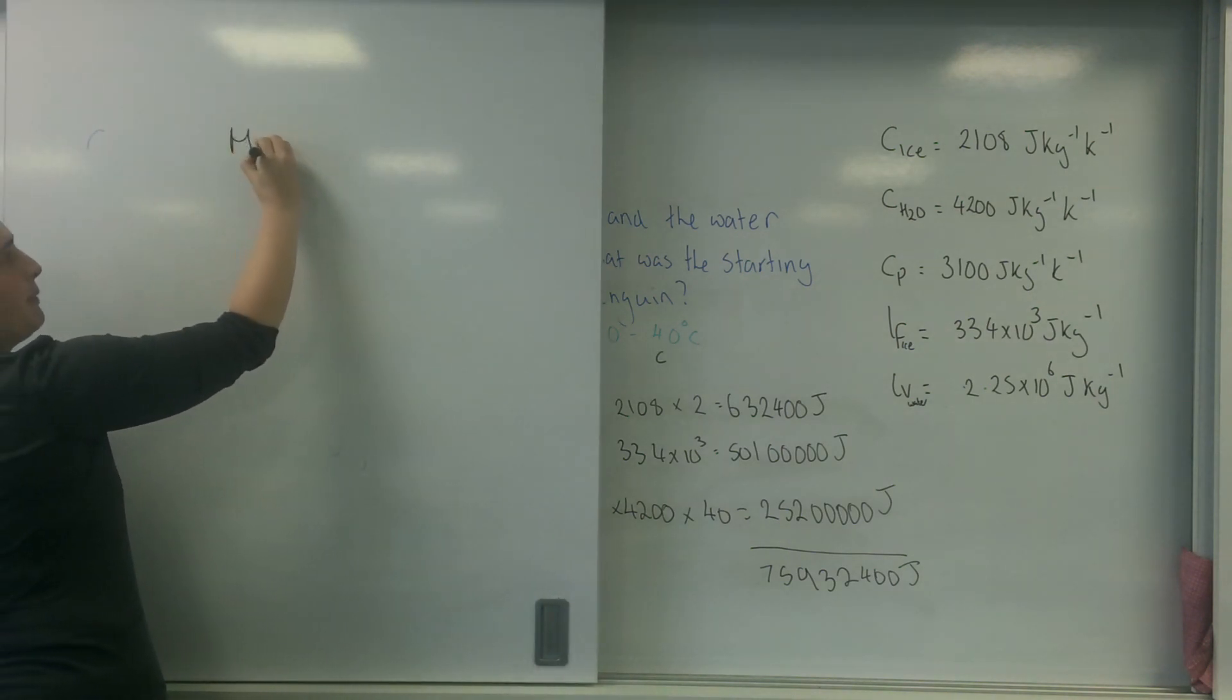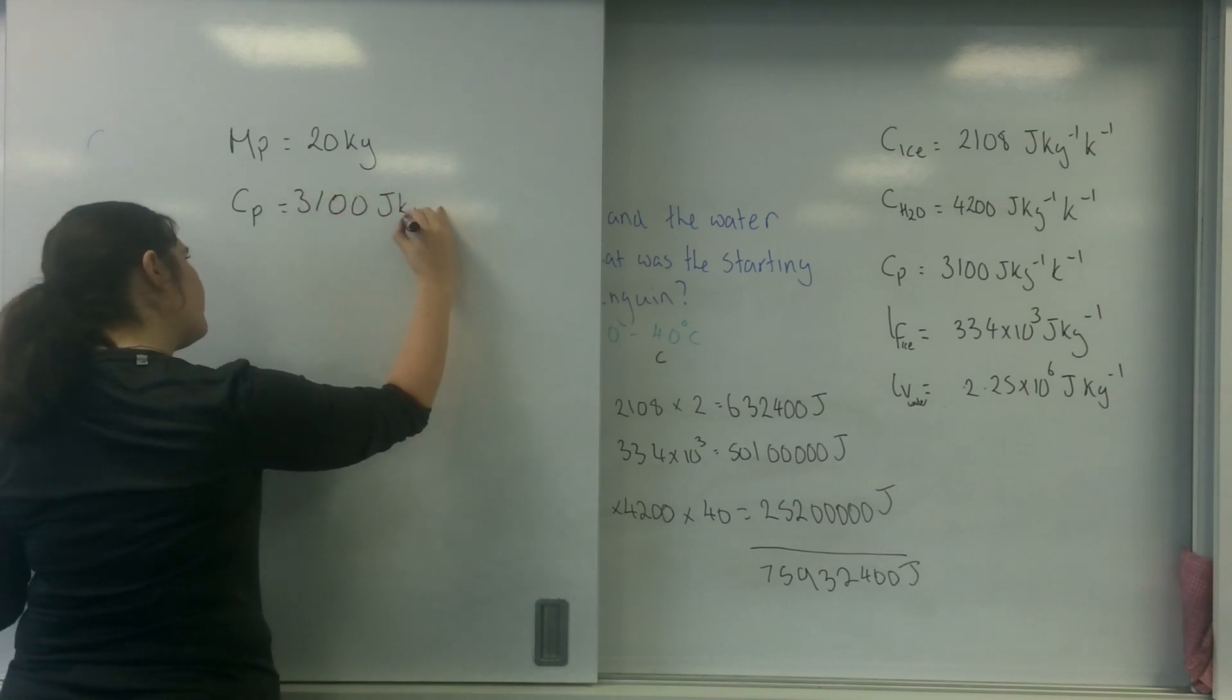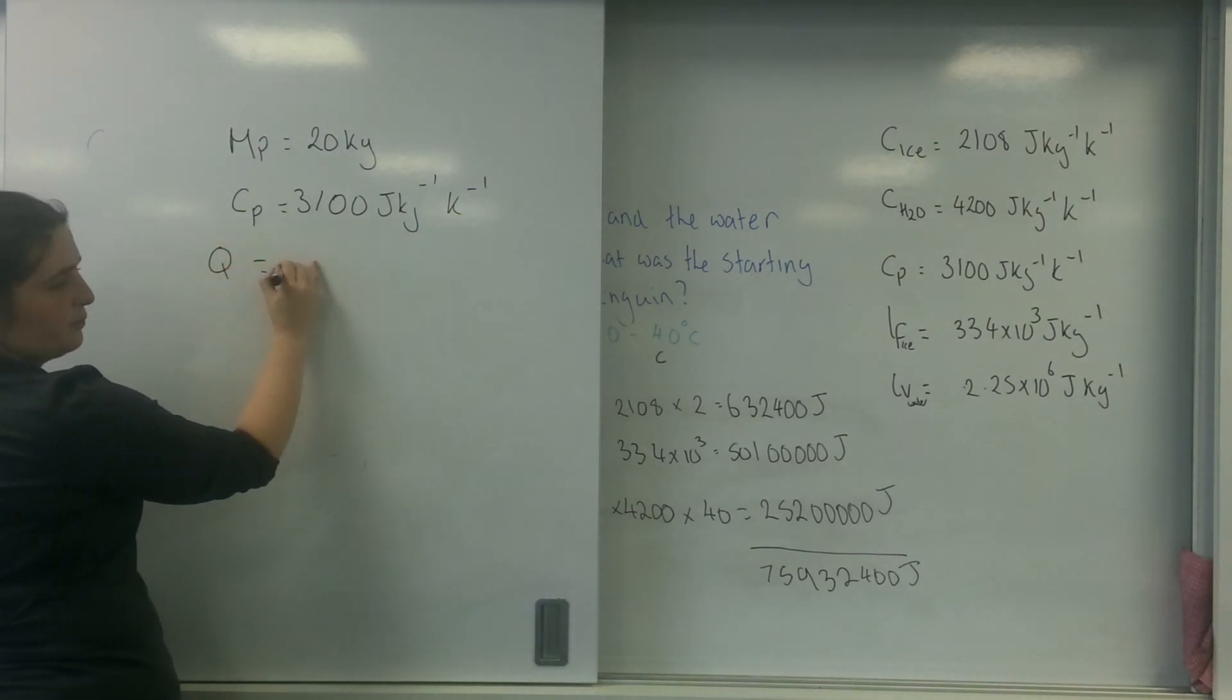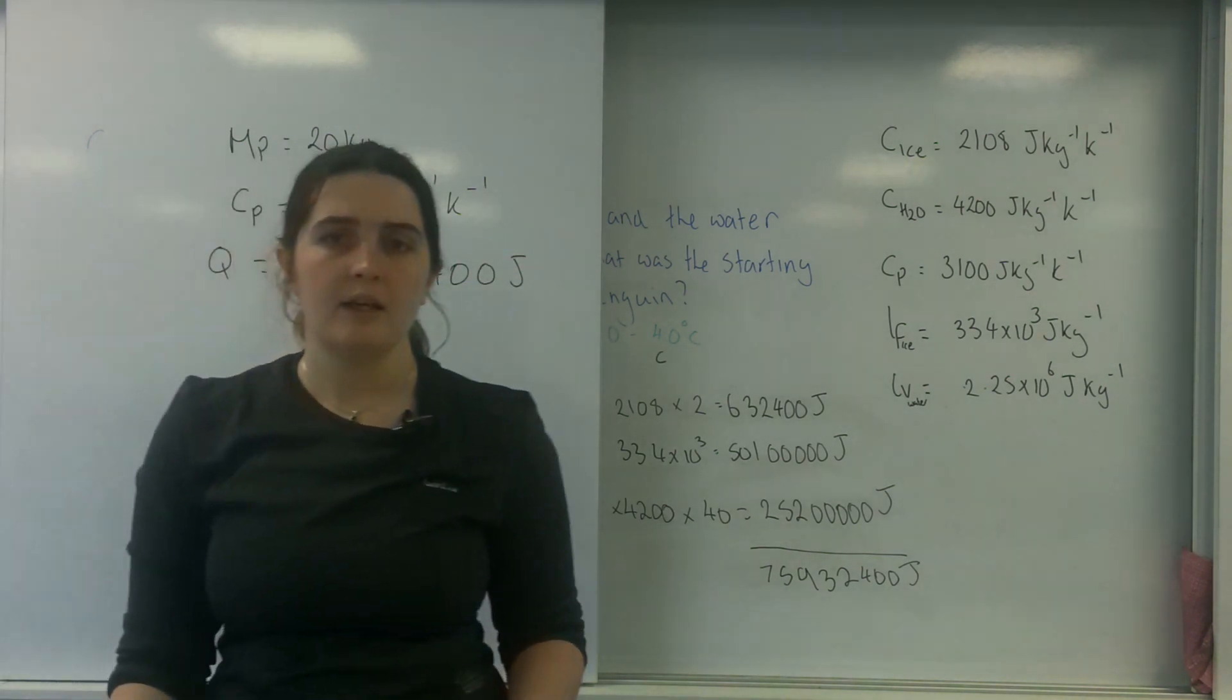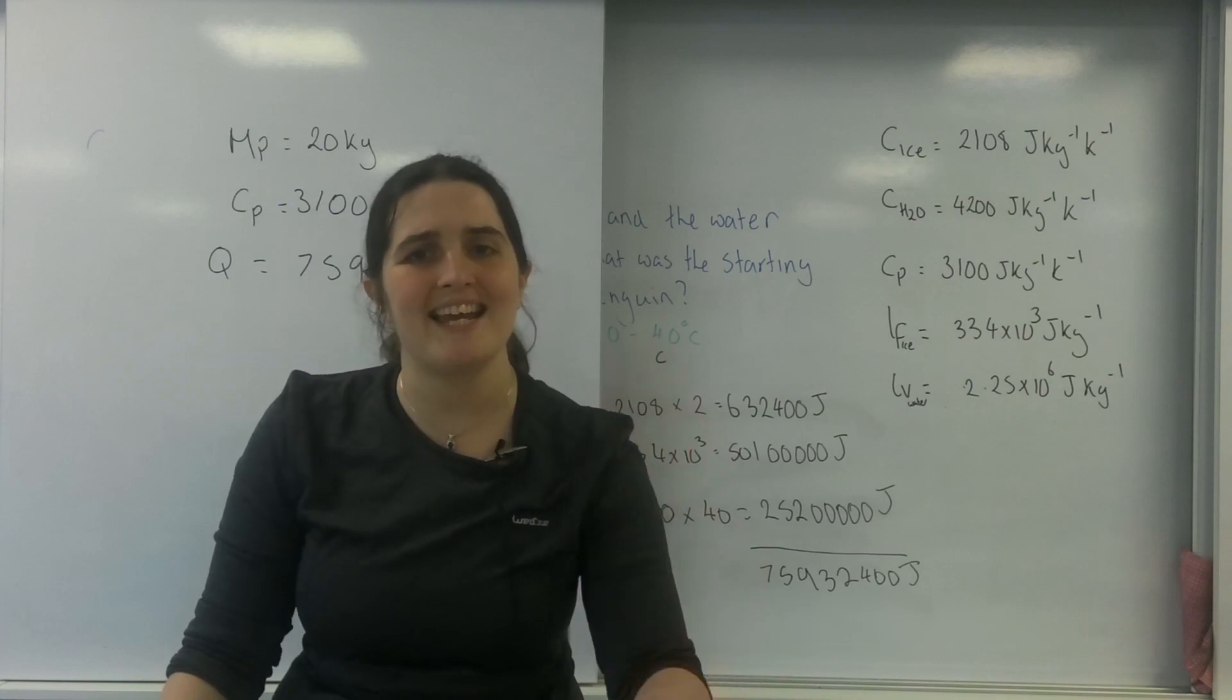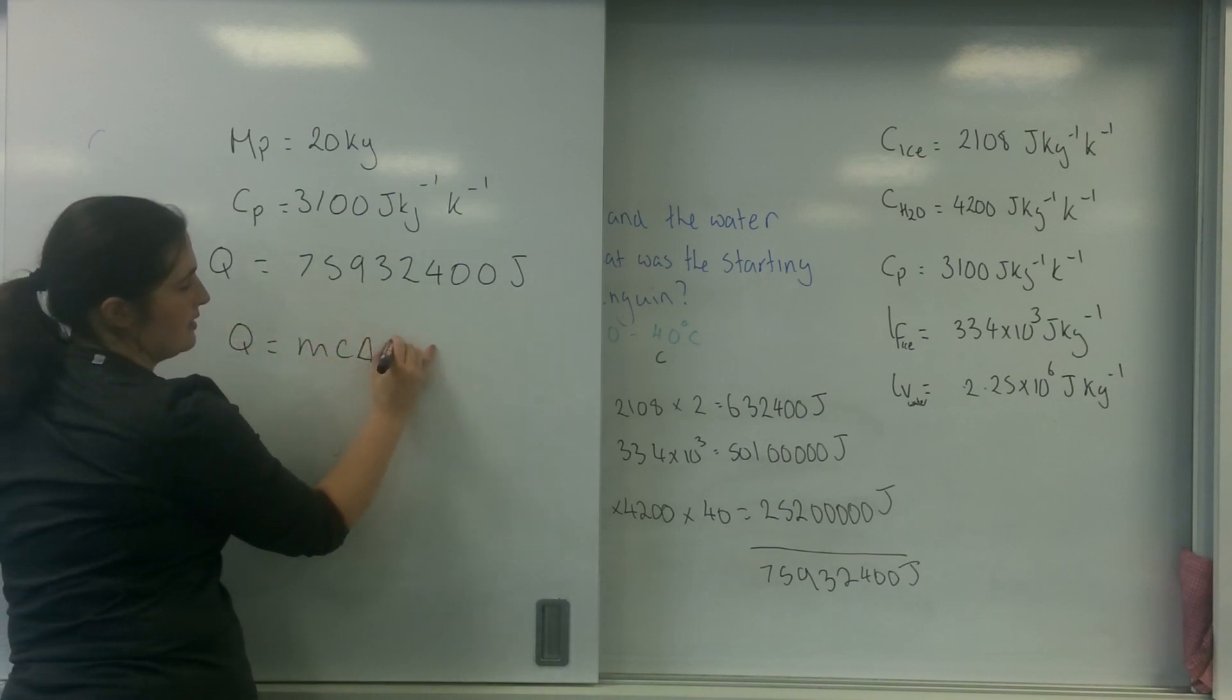So the mass of my penguin was 20 kilograms. My specific heat capacity of my penguin was 3100 joules per kilogram per Kelvin. And the energy that I lost was 75,932,400 joules. Now I'm assuming that this penguin has stayed a solid the whole way through. The penguin hasn't melted. Nothing's happened. It's just been a solid, so there's no change of state here. So let's have a go at this. I know that Q equals MC delta T.